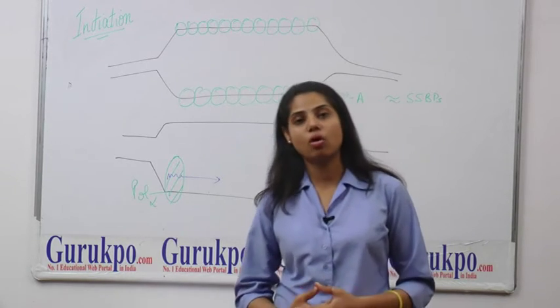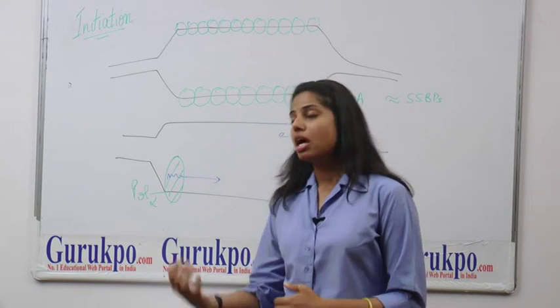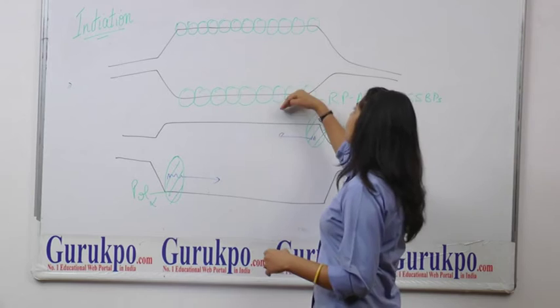After the replication fork is formed, the replication protein A which are equivalents to single-stranded binding proteins helps in the unwinding of both the strands.